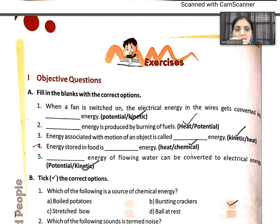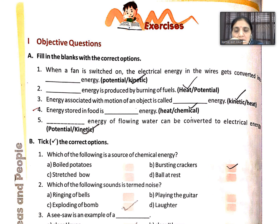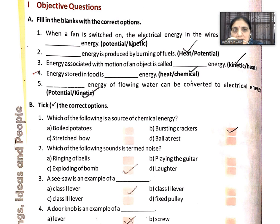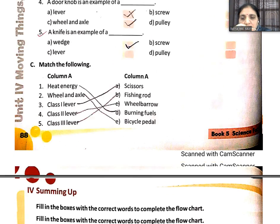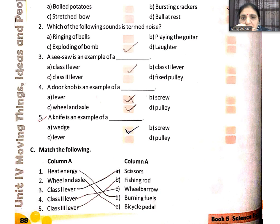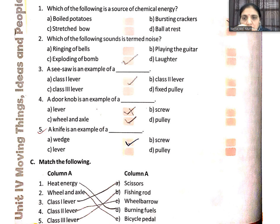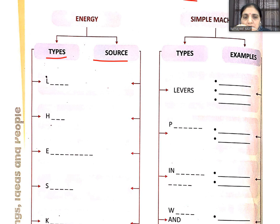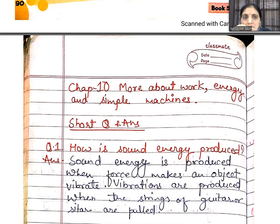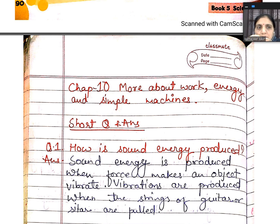Now complete the exercise in the book — pick the correct answer and fill in the blanks. Do it in the book only. First, do it yourself, then correct it with the help of the book and the video. Fill in the blanks with correct words. Energy types, energy source, and question answers will be turned in to the copy.